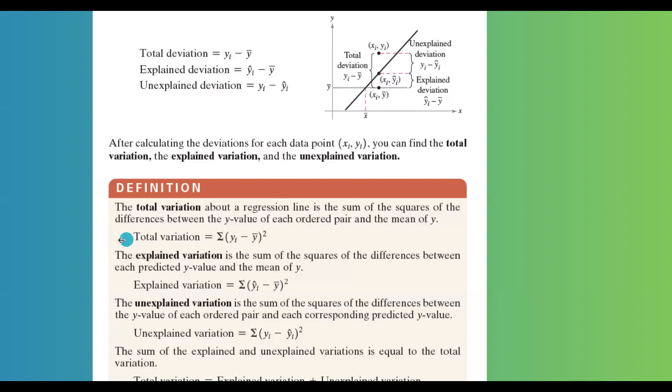Total variation is defined as the summation yi minus y bar to the second power. You can visualize this as well. The total variation is related to total deviation. The deviation is yi minus y bar. When you take the sum, you get the total variation.